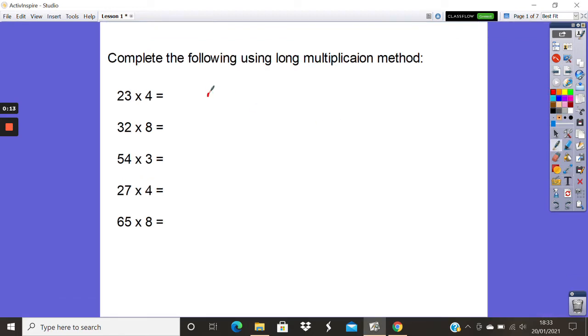So the first one you're going to do is 23 times 4 and there's two ways you can do this. I'll show you both of them, we'll set it out in the long multiplication method first.